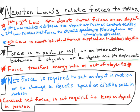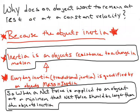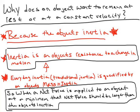Before we get into Newton's second law, please go watch the video on inertia. Why does an object want to remain at rest or at constant velocity? Or another way to put it: why does it take effort to make an object speed up, slow down, or change direction? The answer is inertia.